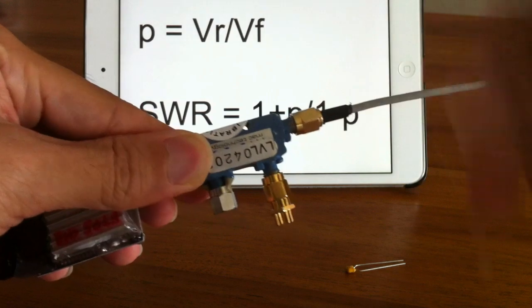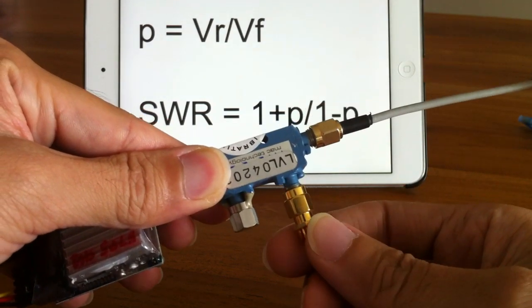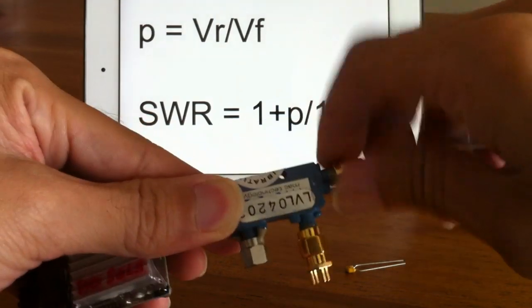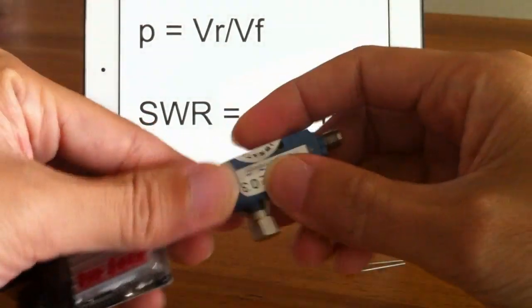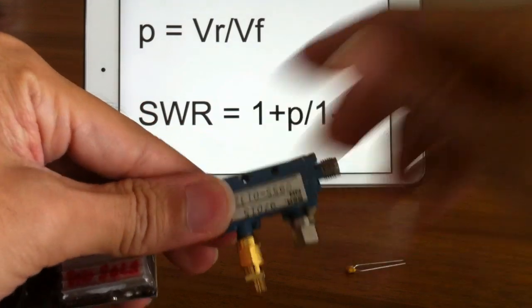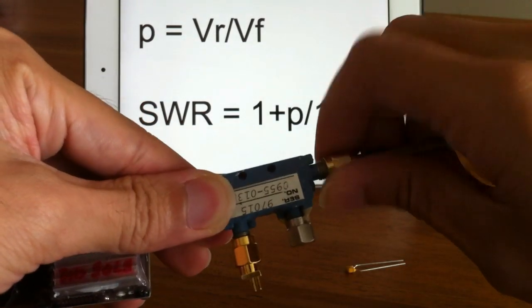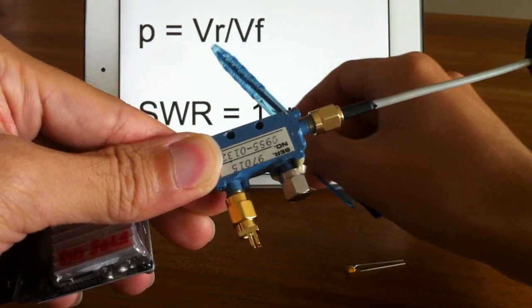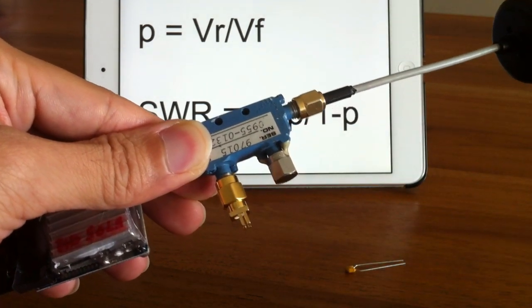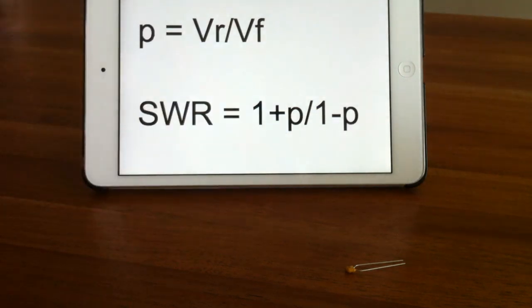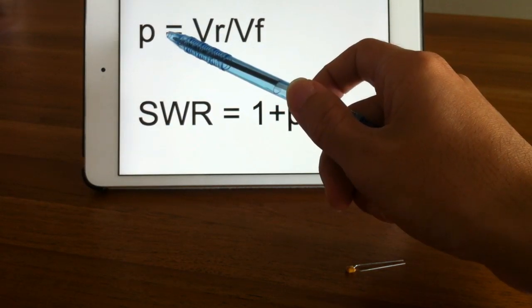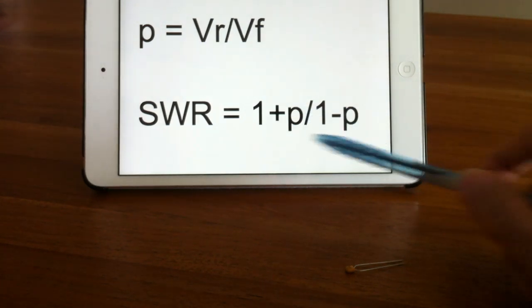So basically, you could measure the forward voltage VF, and if you reverse the coupler, you will measure the reverse voltage VR from the detector. Once you get VR, you are able to calculate the SWR.